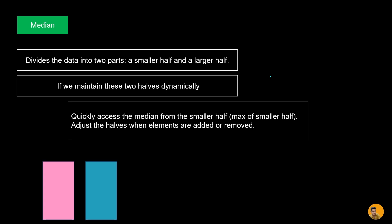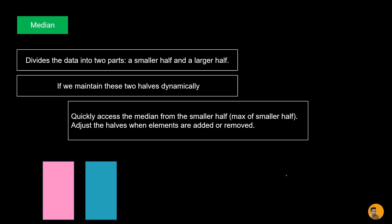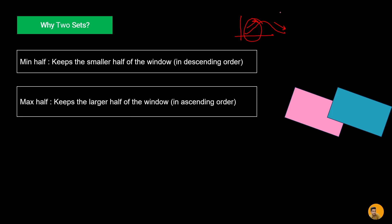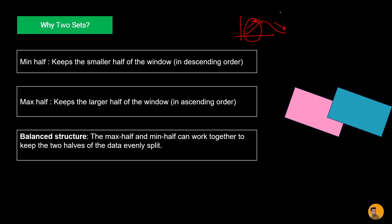We divide the data into two halves: a smaller half and a larger half, as shown in the graph. If we maintain these two halves dynamically, we can quickly access the median from one of them. Taking the max of the smaller half gives us the median. So we use two sets: min-half keeps the smaller half and max-half keeps the larger half of the window.